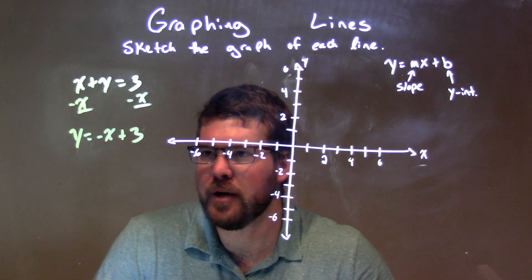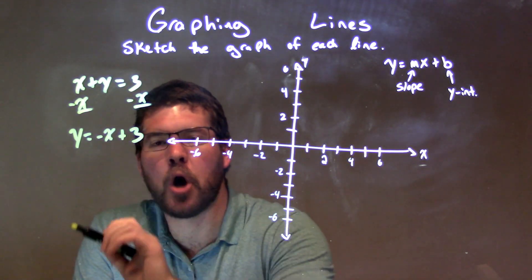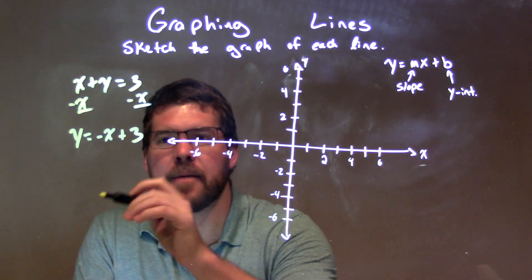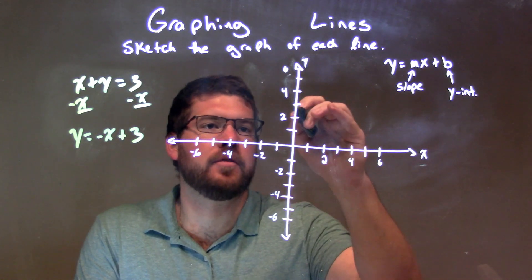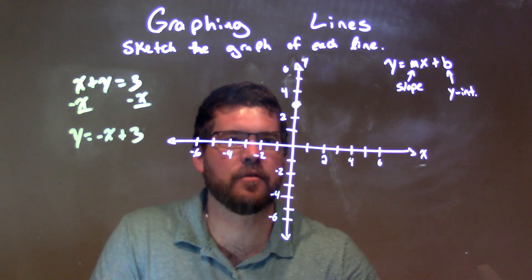Be careful here when we're graphing. We have slope-intercept form. Our slope is just a negative 1, the coefficient in front of the x. So 3 is our y-intercept, so put a positive 3 right here, and our slope is negative 1.